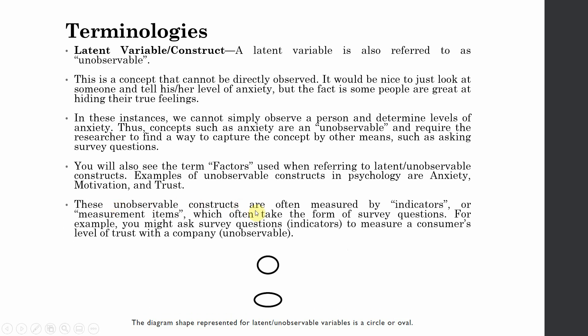These unobservable constructs are often measured by indicators or measurement items. Both of these terms are interchangeable. They take the form of survey questions. For example, you might ask survey questions (indicators) to measure the consumer's level of trust within the company, which is unobservable.